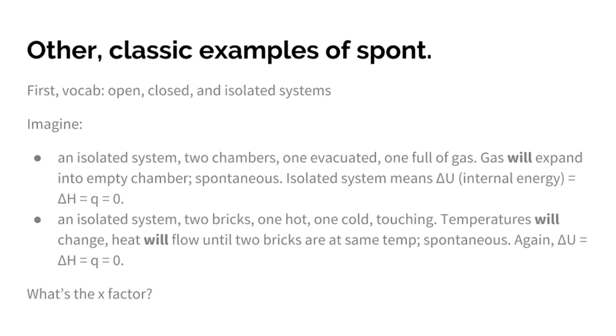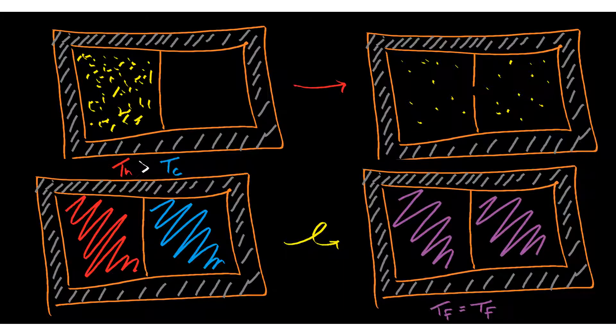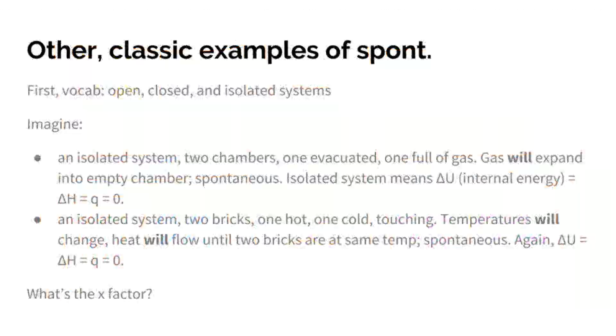Similarly, in an isolated system, you have two bricks, one is hot, one is cold, they're touching one another. The temperatures will change. Heat will flow from the hot brick to the cold brick until the two bricks are at the same temperature. Once again, this is spontaneous and hopefully completely unsurprising. And again, we're talking about an isolated system, and delta U equals delta H equals Q equals zero. There's no change in internal energy. These processes are neither endothermic nor exothermic, and yet they're spontaneous.